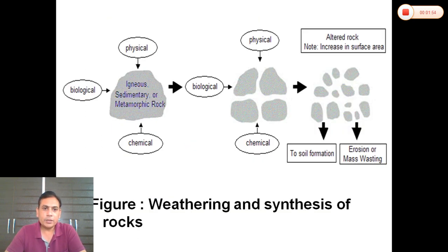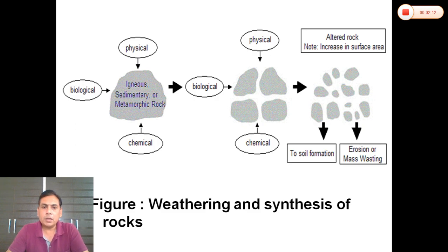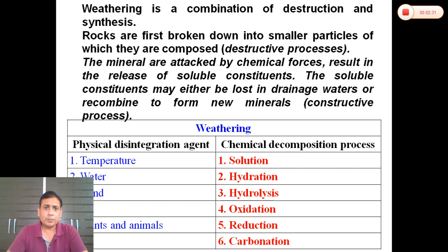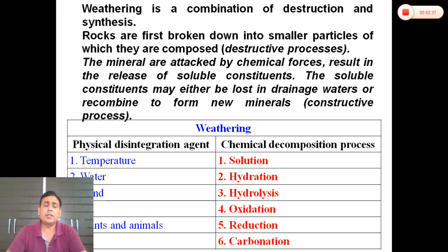In the figure, we see how the weathering process occurs. There are three types of rocks: igneous, sedimentary, and metamorphic. When these rocks are exposed to physical and chemical weathering, they are broken down into smaller and smaller pieces and ultimately become soil. Weathering is a combination of both destruction and synthesis processes.